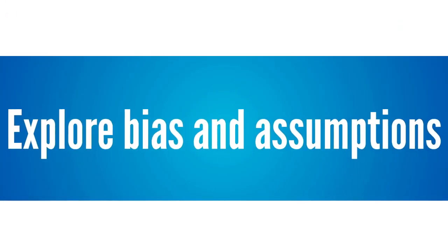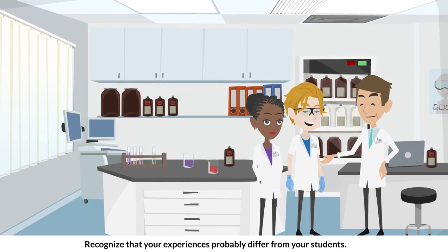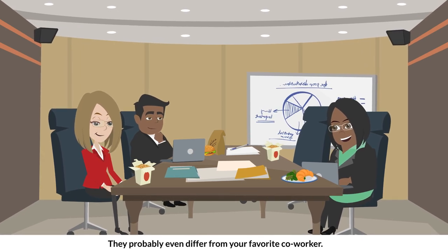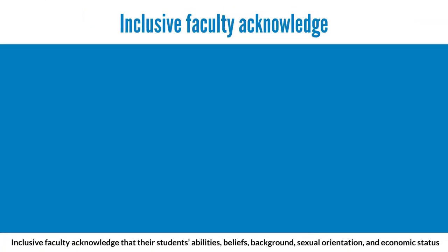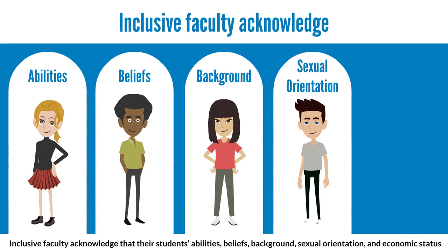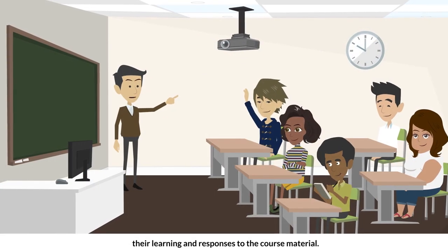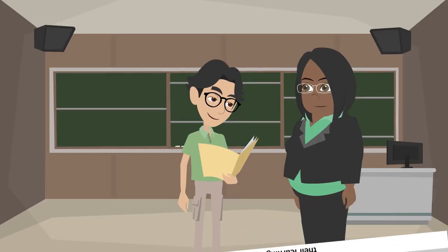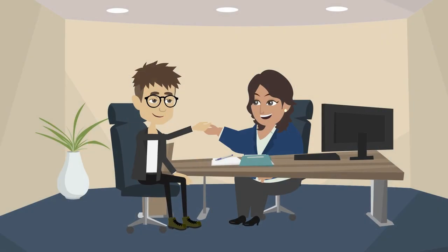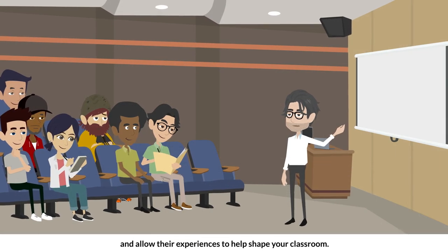Explore bias and assumptions. Recognize that your experiences probably differ from your students — they probably even differ from your favorite co-worker. Inclusive faculty acknowledge that their students' abilities, beliefs, background, sexual orientation, and economic status shape their learning and responses to the course material. Try not to make assumptions about your students, who they are, or how they learn. Instead, get to know them and allow their experiences to help shape your classroom.